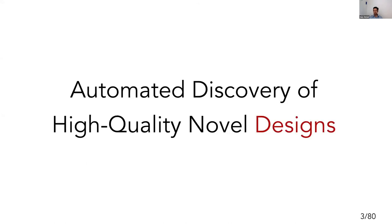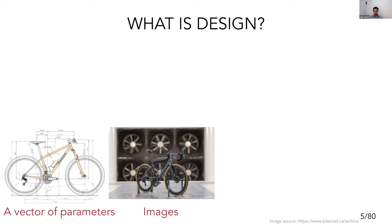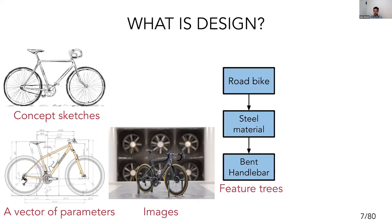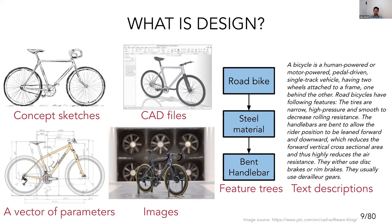Starting to talk about designs, one should understand that everyone has a different interpretation of what design means. If we consider a simple product like a bicycle, a design can be represented by an image, a vector of parameters of different dimensions, or even a concept sketch. It can be feature trees, a text description, or a CAD model drawn in SolidWorks. So design can mean different things to different people, and a lot of the discussions I'll have will apply to most of these representations.